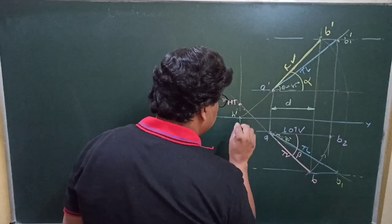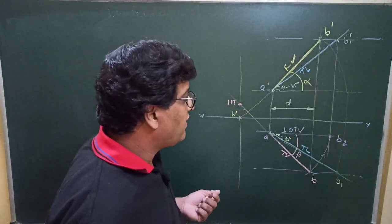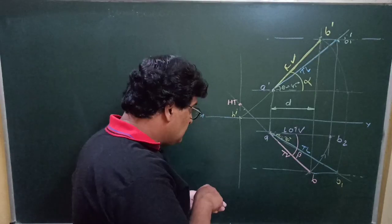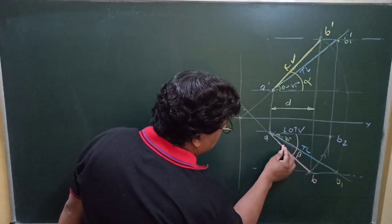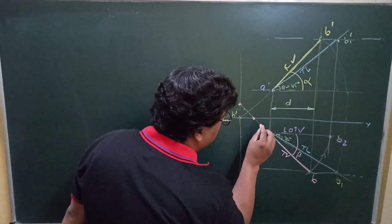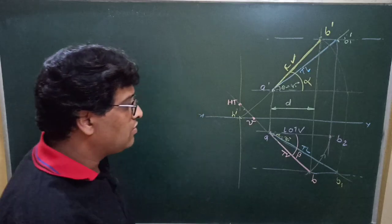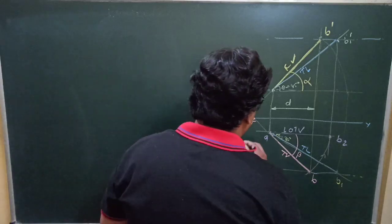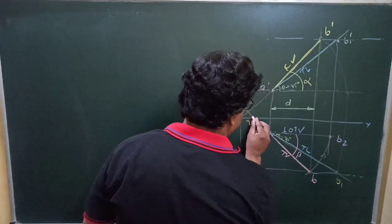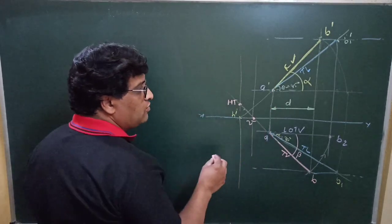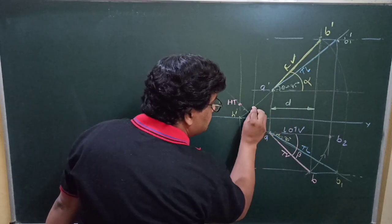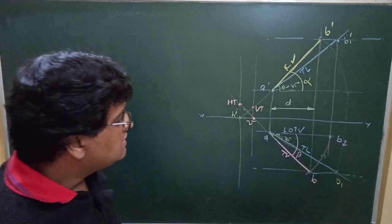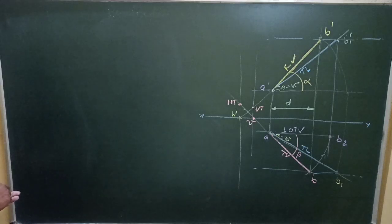Now in a similar manner you can find out the vertical trace and its top view. You have to take the top view and extend it up to the XY line — this will be the intersection point. This point may be denoted small v, which is the top view of the vertical trace. Now drop a perpendicular on this point, and when the front view cuts that perpendicular, that point will be the VT. So in this manner you can find out the vertical trace and horizontal trace.